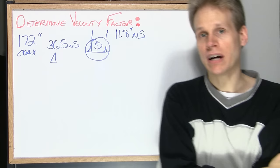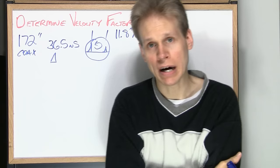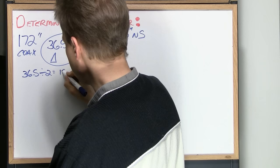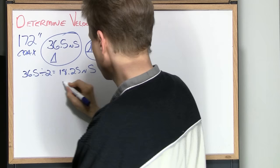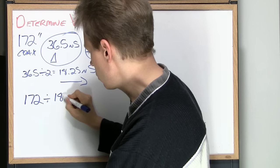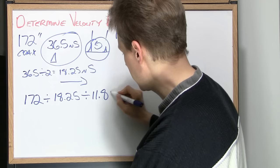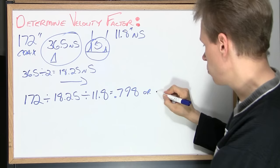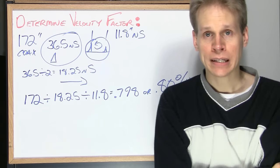So this 36.5 nanoseconds that we have is a round trip. That's from the beginning of the coax to the end and reflecting back. Well we only want to know the time it takes for the signal to go from the beginning of the coax to the end of the coax. And how we get that is we take this 36.5 and simply divide it by 2. 36.5 divided by 2 equals 18.25 nanoseconds, and that is a one way trip. Now we can calculate the velocity factor very easily by taking 172 dividing that by 18.25 and again dividing it by 11.8 which equals 0.798 or we can say 0.80% velocity factor. And that's just how simple it is to calculate the velocity factor.